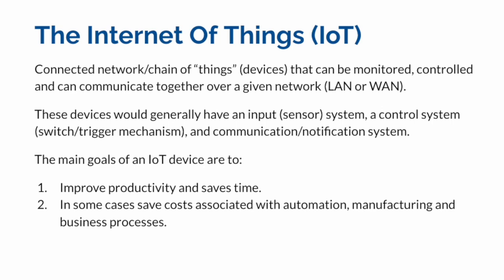These devices would generally have an input system and a control system — input like a sensor system that collects data, and a control system like an actuator or trigger mechanism that can trigger certain things to happen and change environment settings. They also have a communication and notification system. For example, if my son's flower pot lacks water and a plant is dying, I'd want an alarm and a notification.